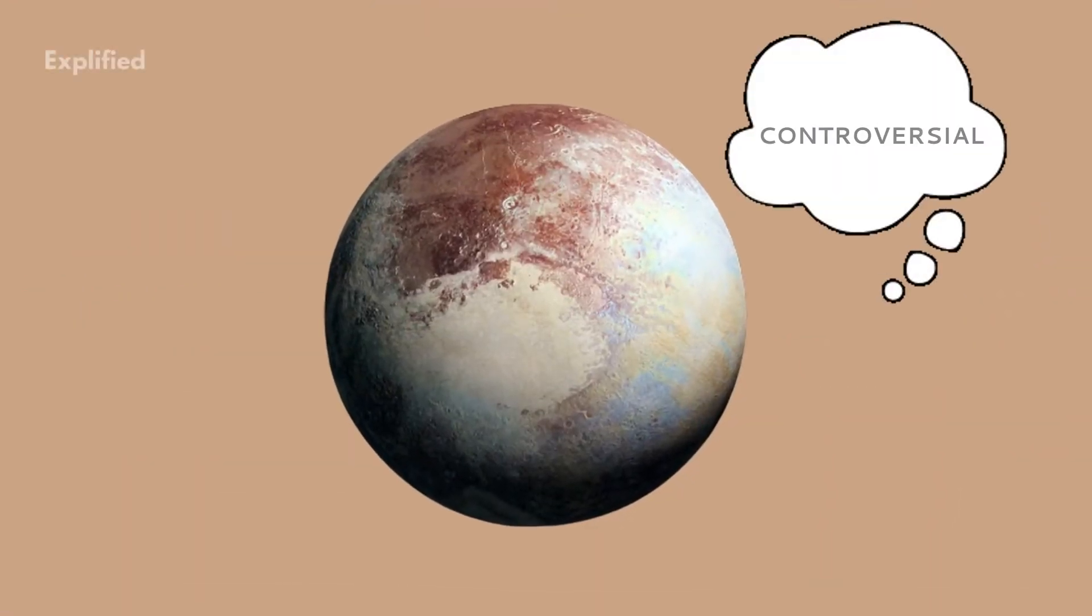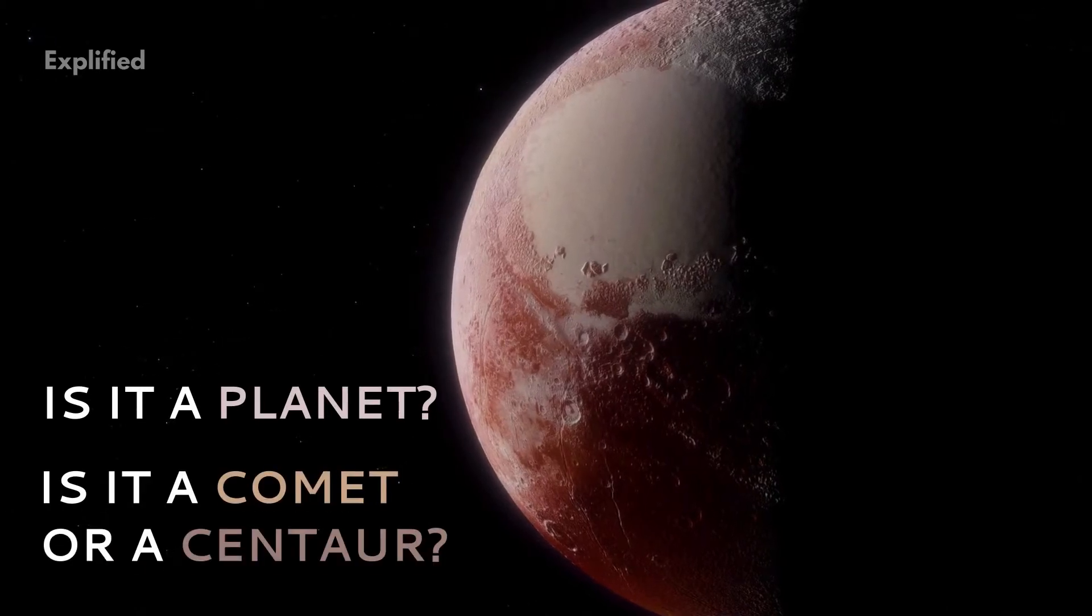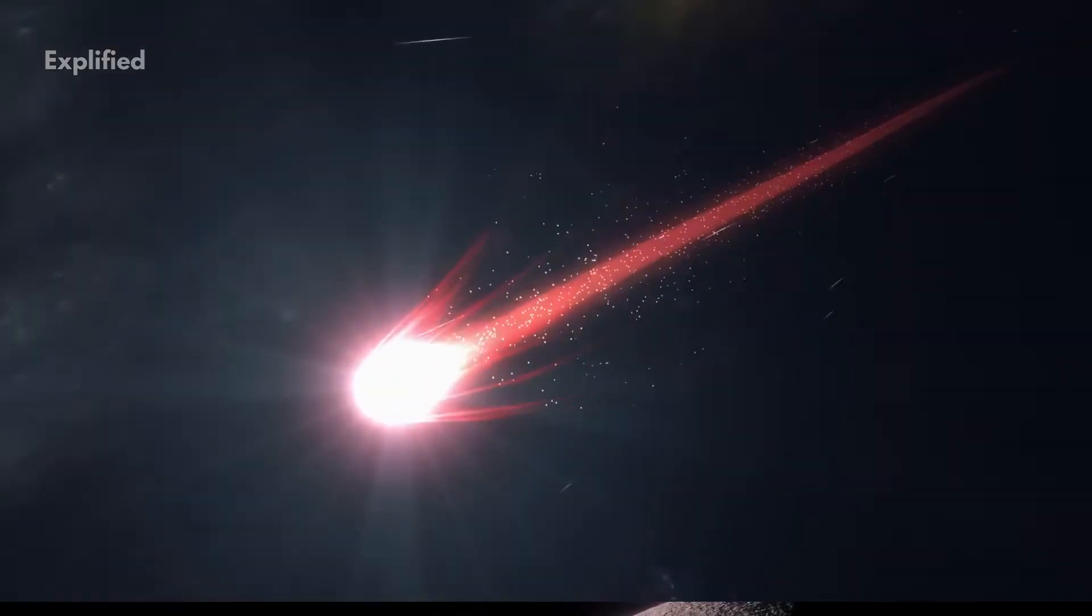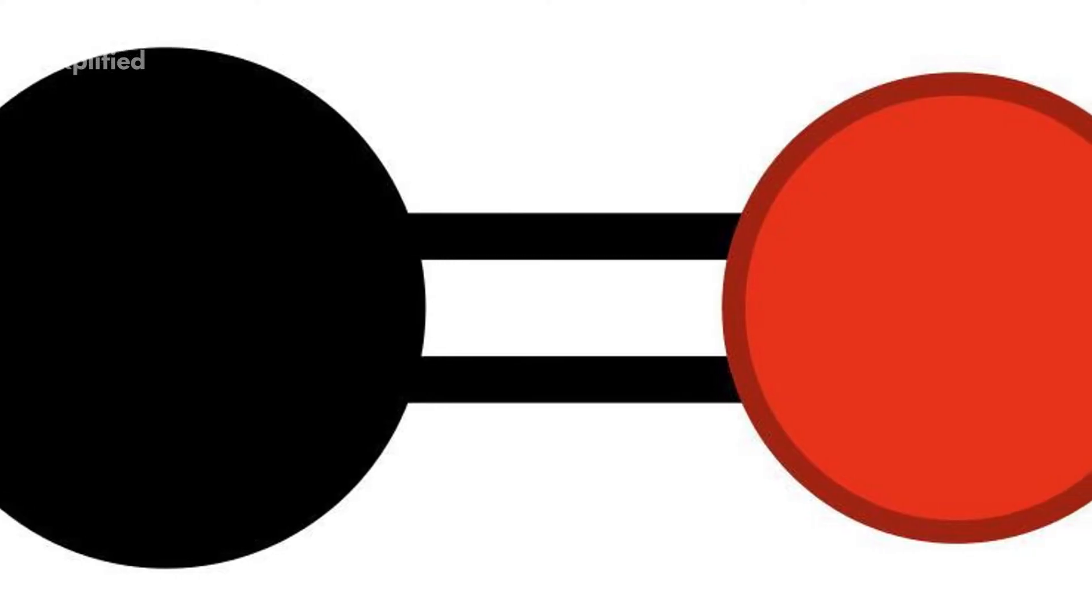Pluto has been controversial in recent years. Is Pluto a planet? Is it a comet or a centaur? Pluto appears to outgas like a comet and it appears to have more of a carbon monoxide atmosphere.